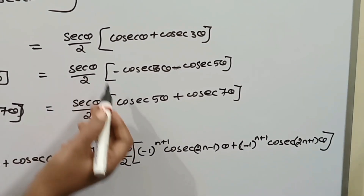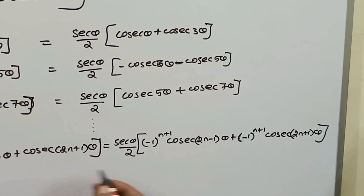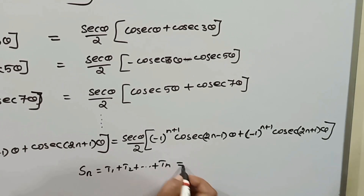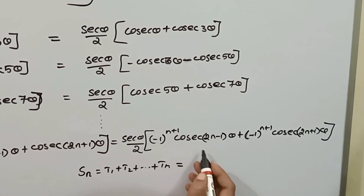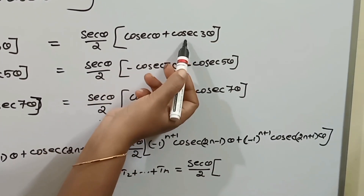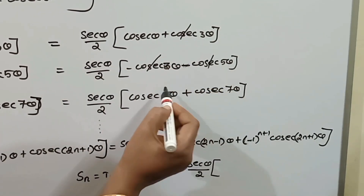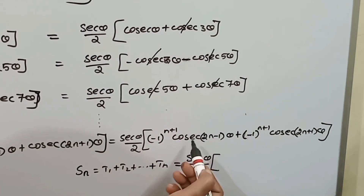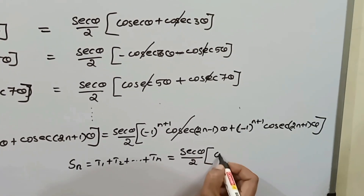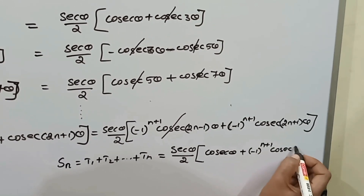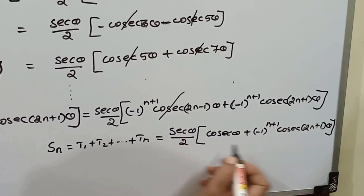Now we add all the terms. The sum Sn = t1 + t2 + ... + tn. On the right hand side, we add all terms with secant theta divided by 2. In the bracket, cosecant theta and cosecant 3 theta — the positive cosecant 3 theta and negative cosecant 3 theta cancel. Terms cancel throughout. We are left with cosecant theta plus minus 1 whole power n plus 1 into cosecant(2n+1) theta, which gives the final sum.